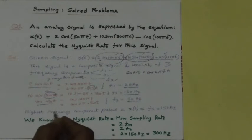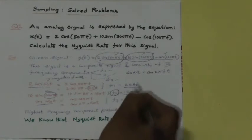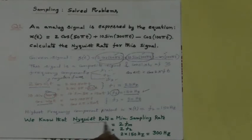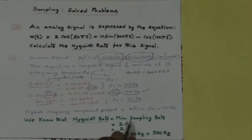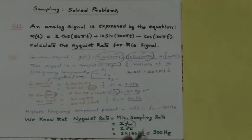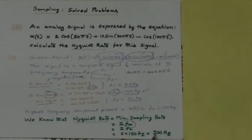Out of these three frequency components, the highest frequency component is F2 at 150 Hz. The Nyquist rate, which is the minimum sampling rate, is given by twice of Fm, where Fm is the maximum modulating frequency, which is F2. So in this case the Nyquist rate is 300 Hz, meaning 300 cycles per second.